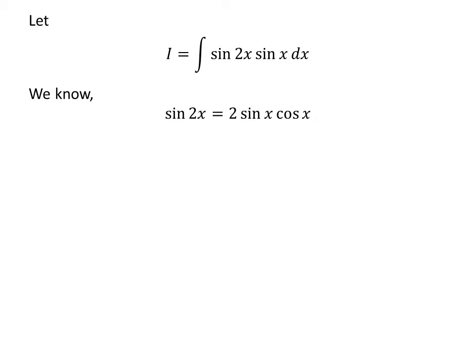We know the trigonometry identity sine of 2 times x is equal to 2 times sine of x times cosine of x. The video appearing in the upper right corner explains the proof of this trigonometry identity. The link of the video has also been mentioned in the description section.